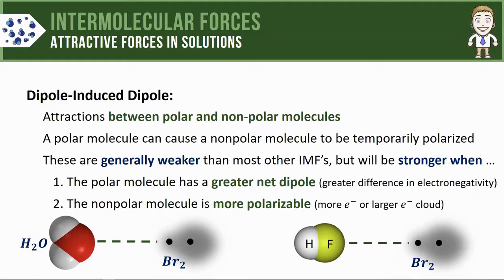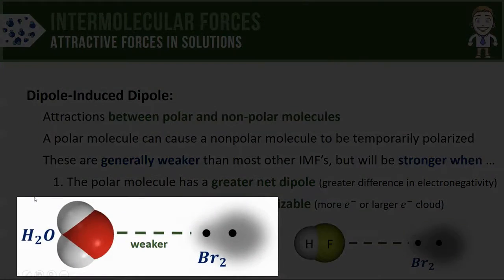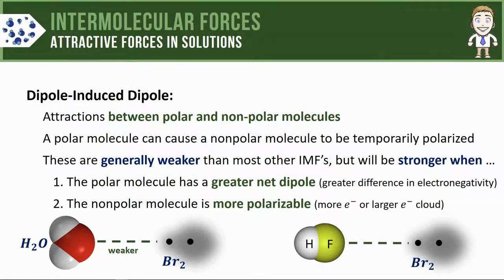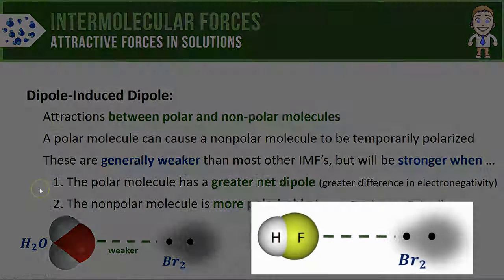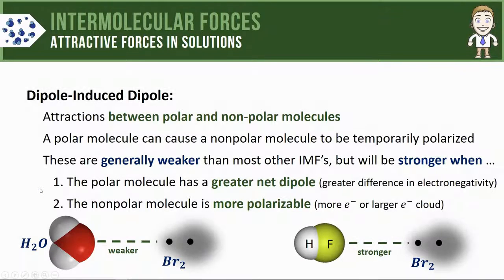Here's a different example involving water molecules and hydrogen fluoride molecules both being attracted to bromine. There's a smaller electronegativity difference between oxygen and hydrogen atoms, so the water molecules have a smaller net dipole — meaning the dipole-induced dipole force here is going to be weaker. Hydrogen fluoride has a greater net dipole because the electronegativity difference between H and F is greater, resulting in stronger dipole-induced dipole forces between HF and bromine.